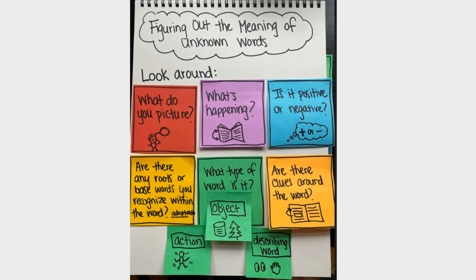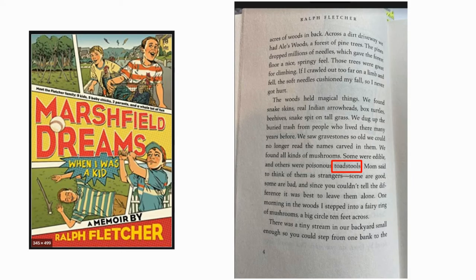So it's important that you read all around the word. As I was reading Marshfield Dreams, I came across a word that I didn't know, actually in the very beginning, in the very first chapter. I came across this word: toadstools. Let me just read you the sentence — "Some were edible, and others were poisonous toadstools." So I want to go through these different strategies to see if I can figure out what the meaning of toadstools is.